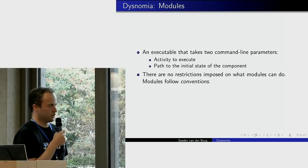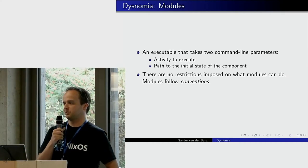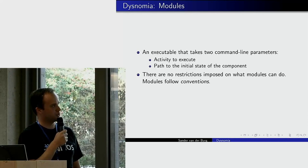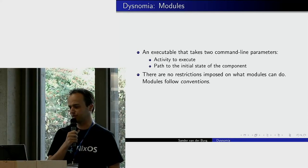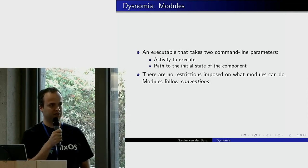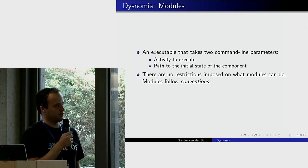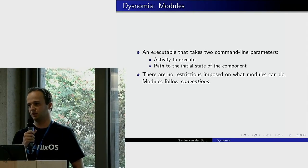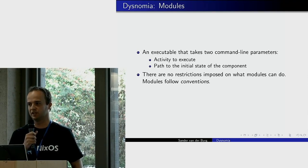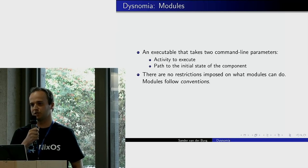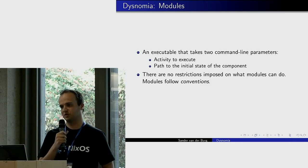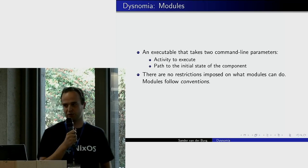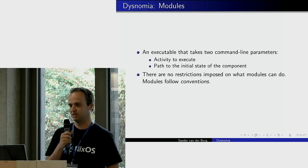A Dysnomia module is just an executable that takes two command line parameters: the first is the activity you want to execute, and the second is the path to the initial state of the component. There are basically no restrictions on what modules can do — unlike build processes run by the Nix package manager, Dysnomia modules can write anywhere outside the Nix store. They do follow some conventions to keep things consistent.